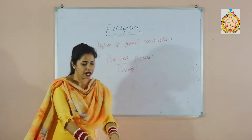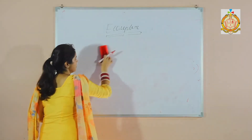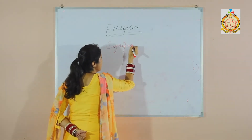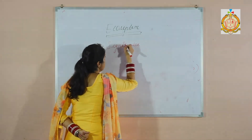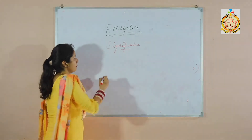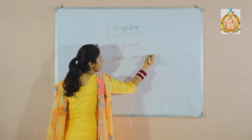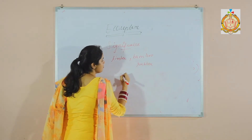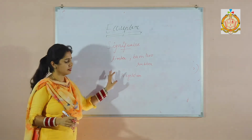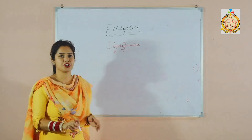The last topic is the significance of forests. Forests provide us many things such as timber, bamboo, and rubber, along with different types of vegetation. They also help to prevent soil erosion and provide many other benefits. This is all about the chapter on ecosystems.